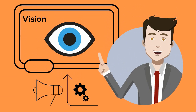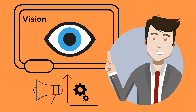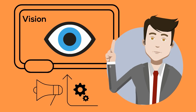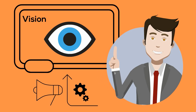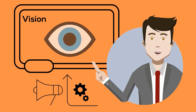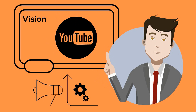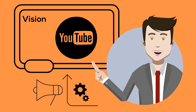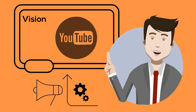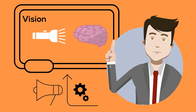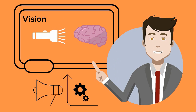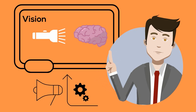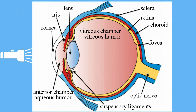Welcome to Moo Moo Math and Science. In this video I'd like to talk about your vision. Your eyes allow you to see the world around you — in fact, your eyes allow you to watch this video. But how do your eyes transfer the light energy into impulses that your brain can interpret? In this video I'd like to go over those steps.